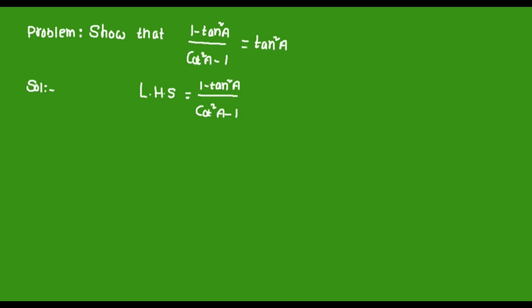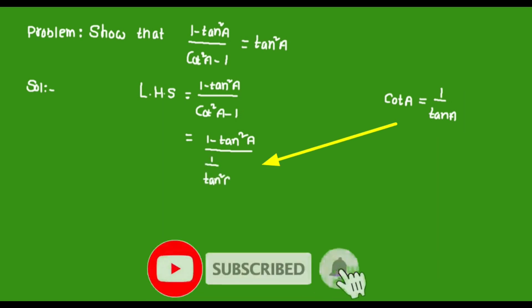We know that cot a = 1/tan a. In the denominator there is a chance to convert cot²a in terms of tan a. So by converting denominator we will get (1 - tan²a)/(cot²a).